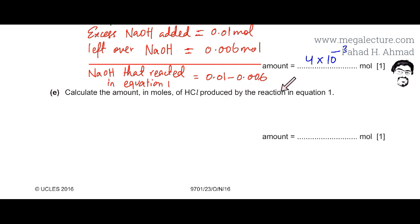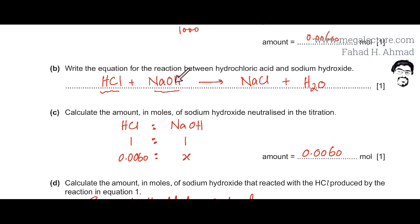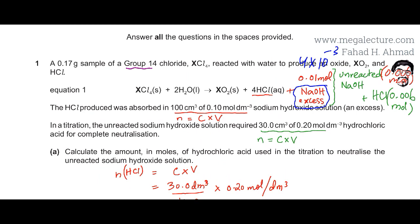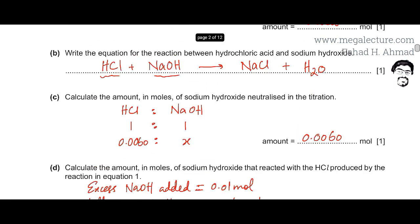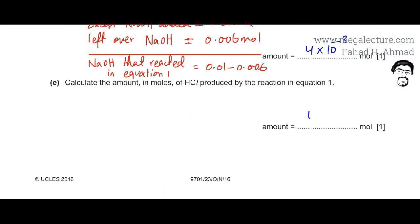Part E asks to calculate the moles of HCl produced in equation 1. Since NaOH and HCl react in a 1:1 ratio, the moles of HCl produced equal the moles of NaOH that reacted — which is 4 × 10⁻³ moles.